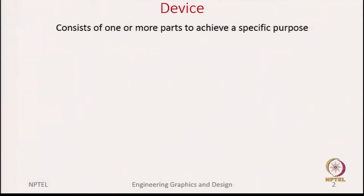Devices consist of one or more parts to achieve a specific purpose. There are devices which have only one single part — for example, a wrench used to tighten a nut is a single part, but it is still called a device. Similarly, a scissors is a collection of a few parts: it has two handles joined with a pin, making it a device because it is used to cut things and has multiple parts.